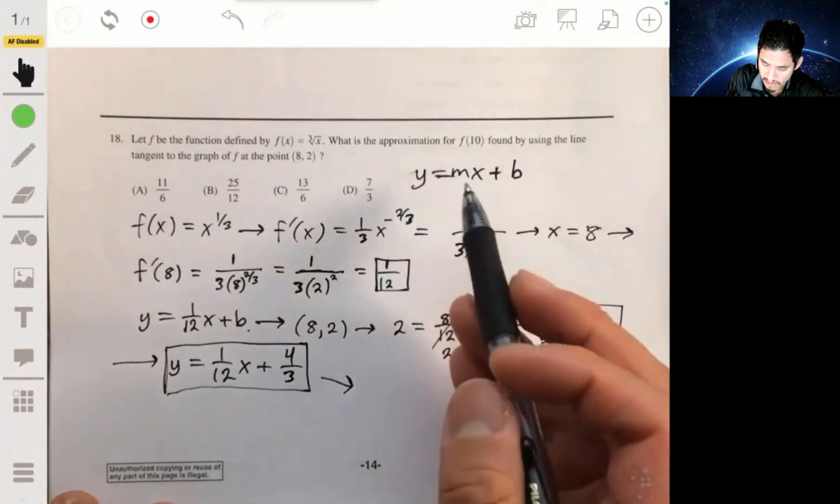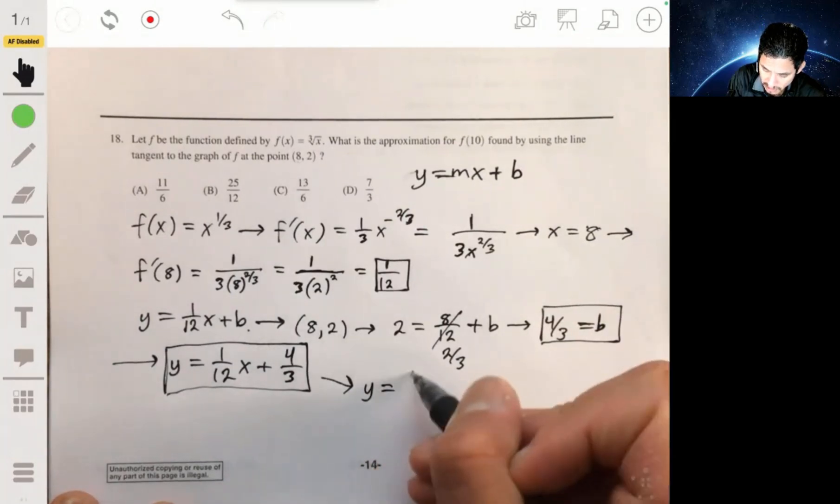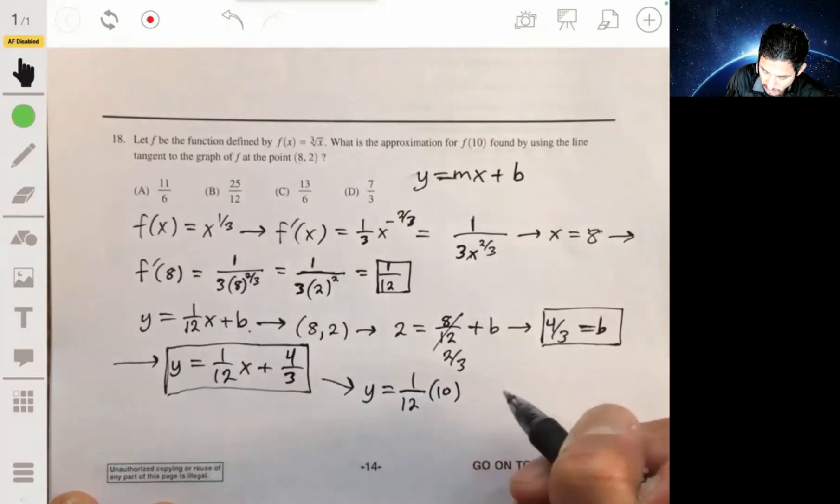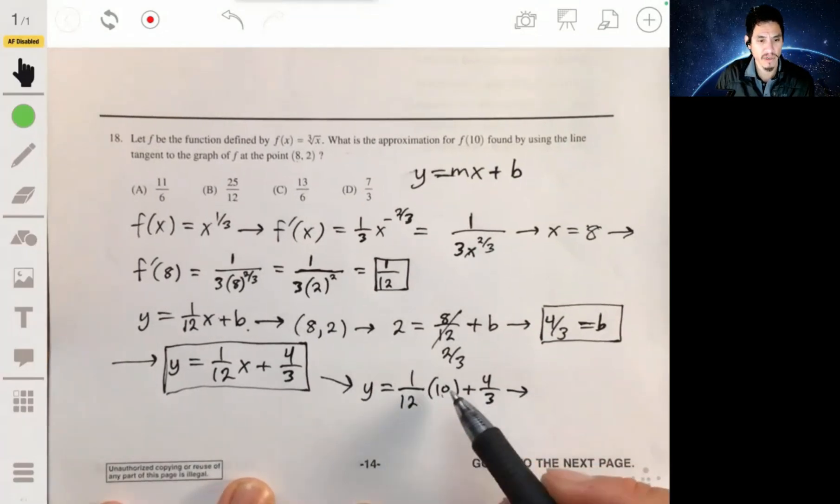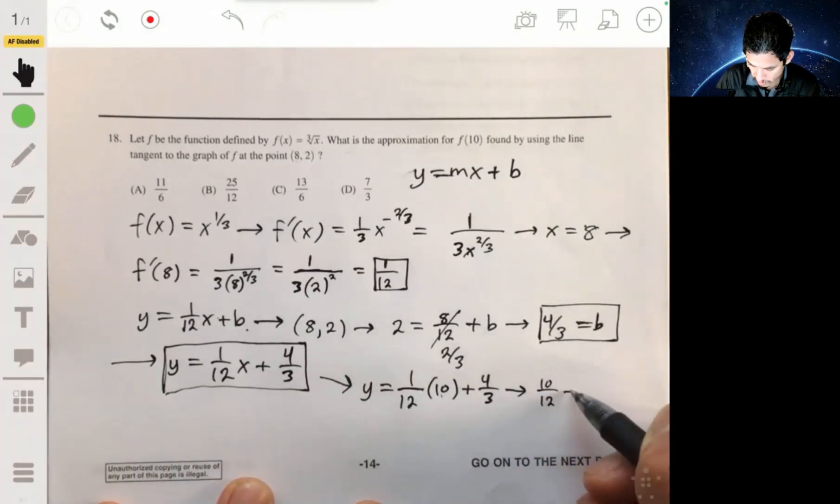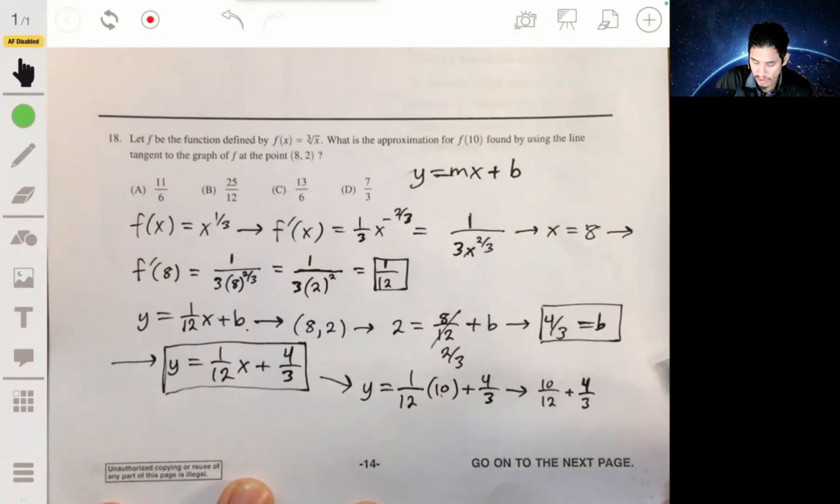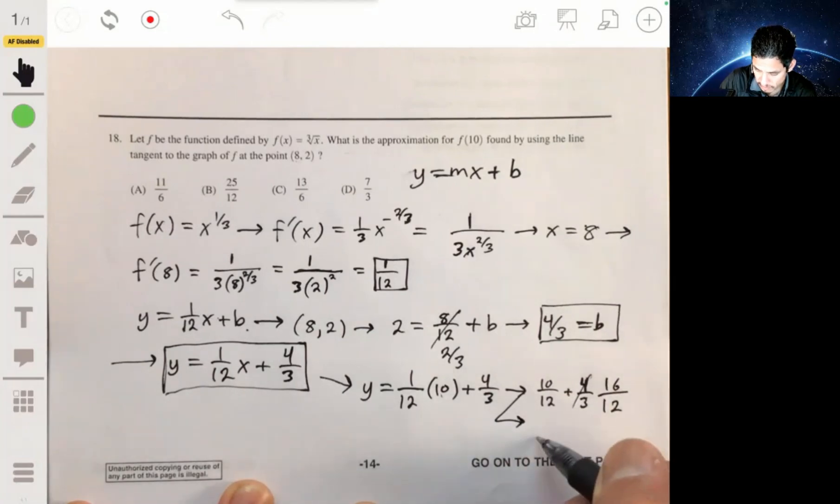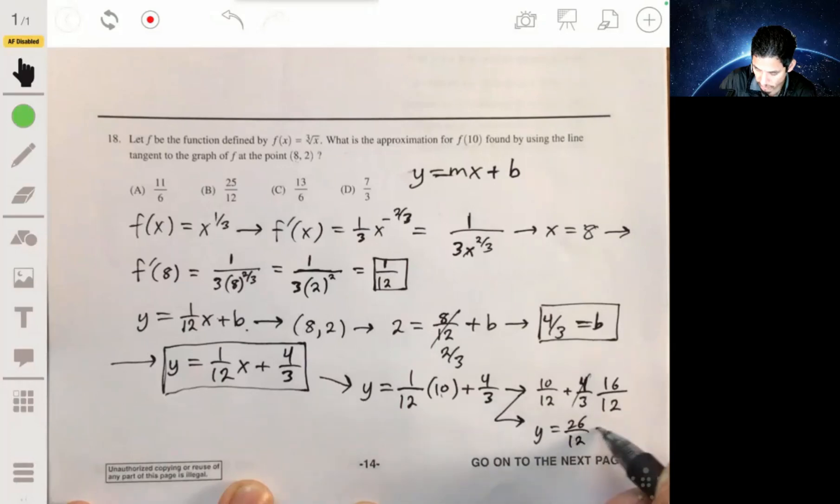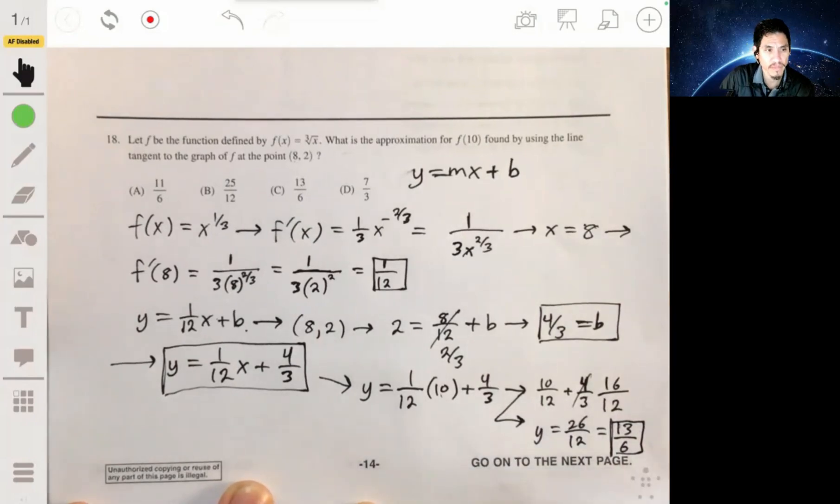Now we evaluate it for f of 10. So we plug in 10 for x. We'll get y is 10/12 plus 4/3. If we combine these fractions, 4/3 is going to be 16/12. So what you have is 26/12, which will reduce to 13/6. And so your answer will be C.